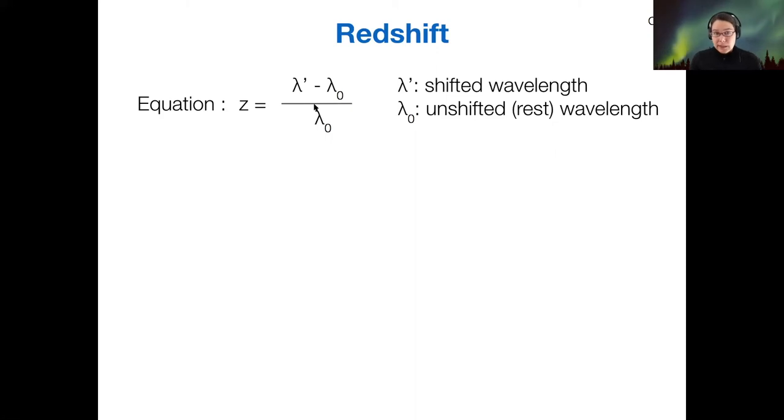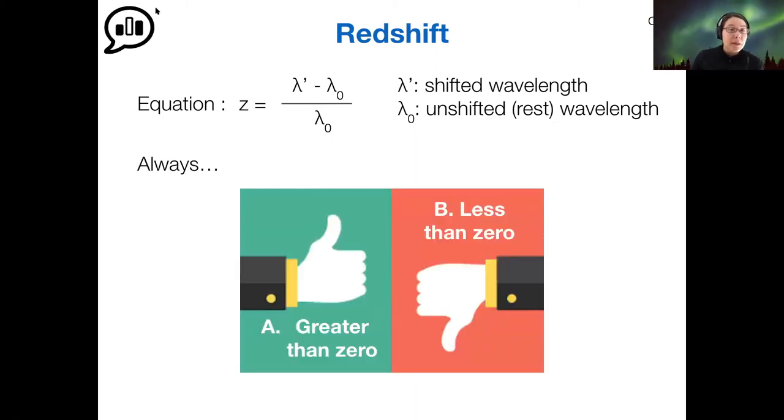We used this to calculate, for example, the speed of an object. So for this redshift equation, what would you say is true about how this equation should play out in the case of a redshift?